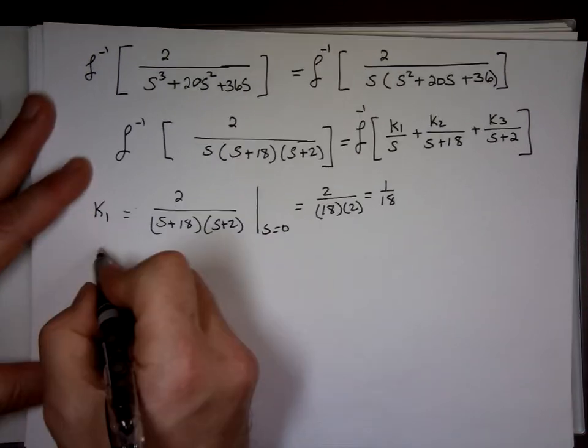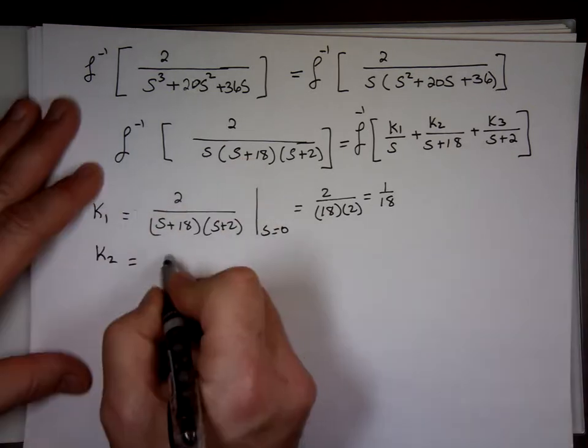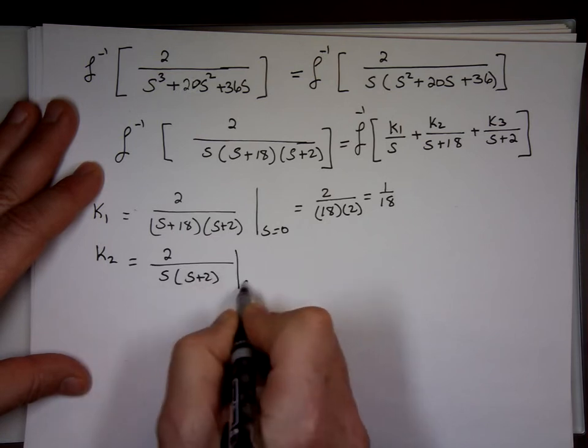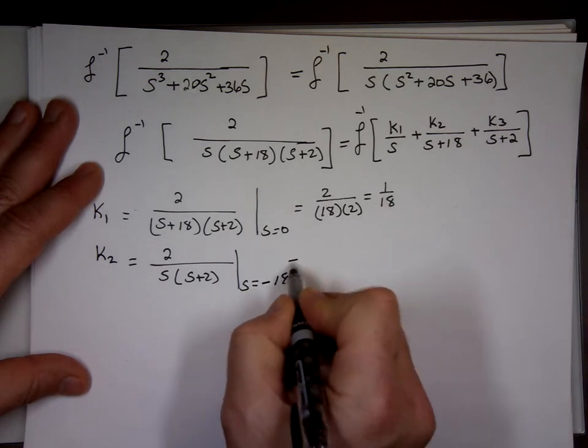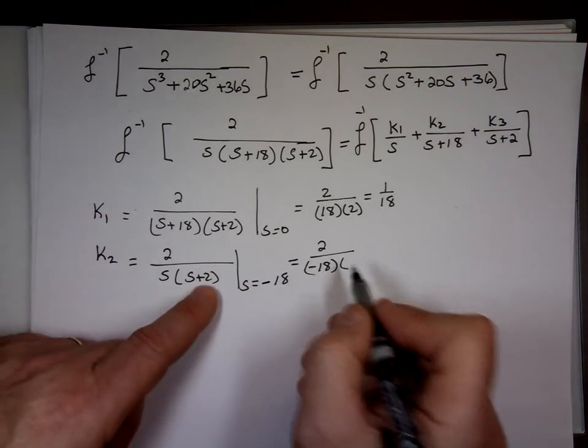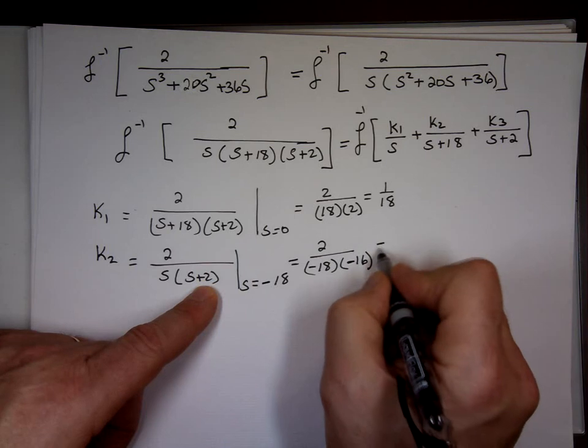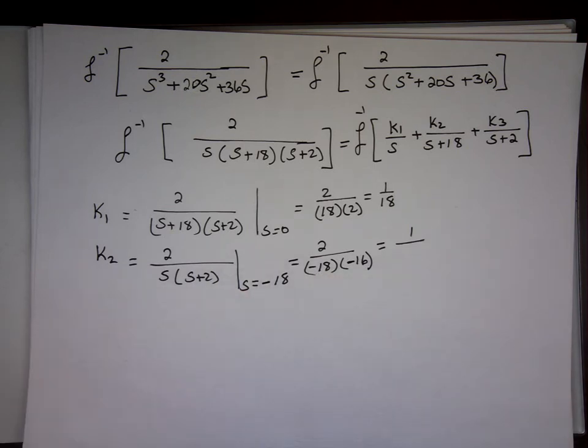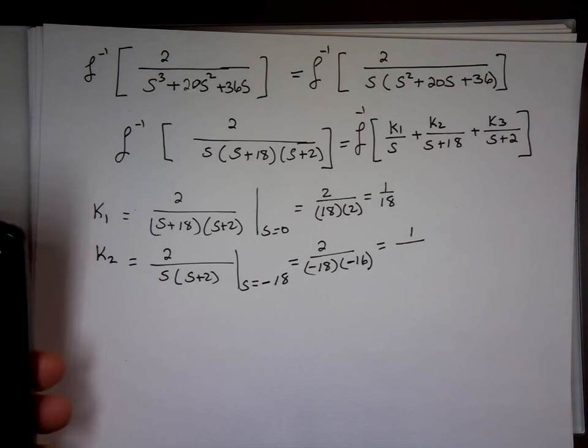K2. K2 sitting on top of S+18, take S+18 out of this, 2 over S times (S+2), when S equals what? What makes it 0? Negative 18. Negative 18 times what's -18+2? Negative 16. Negative and negative they cancel each other out, 1 over, and this will be 8 times 18, I'm dividing by 2 already. 144.